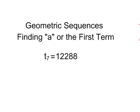Now the givens here are a term, in this case the 7th term, and we're also going to assume that we've been given the common ratio, or r. So in this case, r is 4.